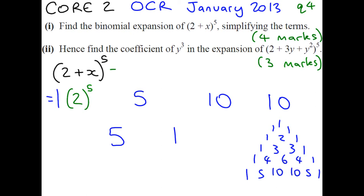The next one is going to be 2 to the power of 4, and it's going to be x. The next one is going to be 2 cubed, and x squared. The next one, 2 squared, x cubed. The next one is going to be just 2, and x to the power of 4. And the final one, you're going to select no 2's, and x to the power of 5.